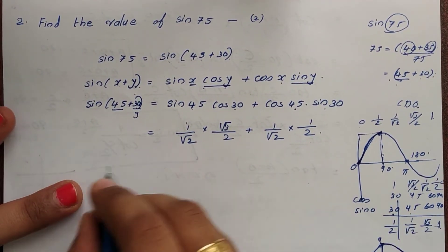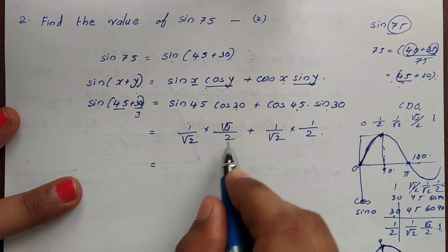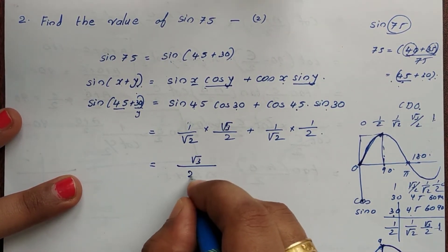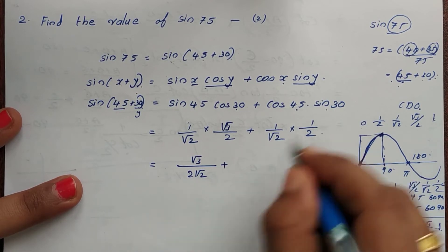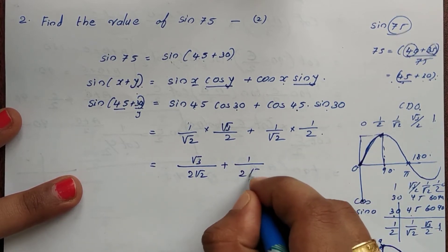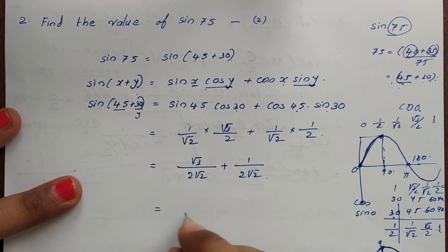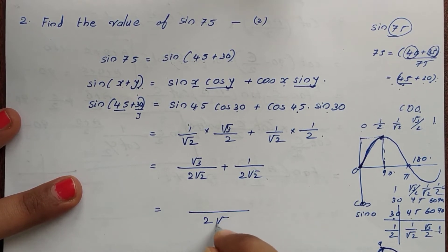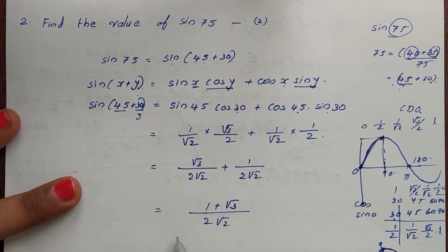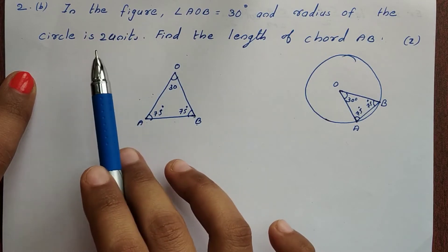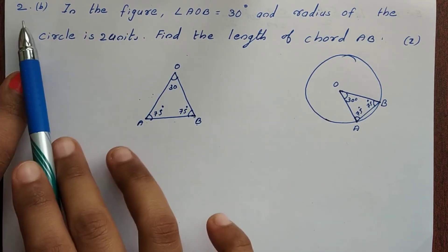So sin75 equals √3/(2√2) plus 1/(2√2), which simplifies to (1 + √3)/(2√2). That is the answer.